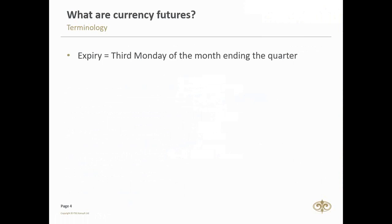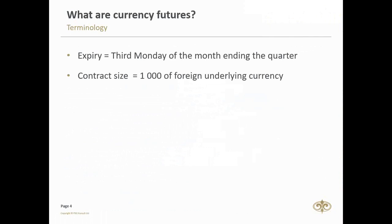Currency futures have an expiry date — this is important to understand. Expiry is on the third Monday of the month ending the quarter: March, June, September, and December. So they have a life of approximately 90 days. The contract size is 1,000 of the foreign underlying currency. So if you're trading dollars, it's 1,000 dollars; euros would be 1,000 euros; pounds 1,000 pounds. At roughly 13 Rand to the Dollar, the contract value is 13,000 Rand; around 14,000 Rand for the Euro contract; and around 16,700 Rand for the Pound contract.